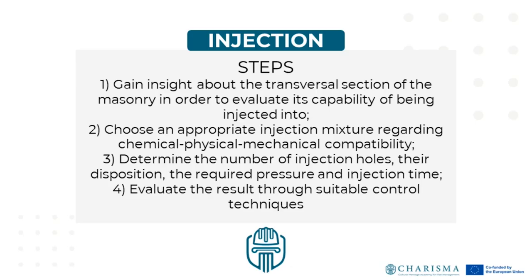Injection is an important intervention that can be used to strengthen walls when feasible. It involves four steps. Firstly, knowledge of the transversal section of the masonry is required in order to evaluate its capability of being injected into. Secondly, an appropriate injection mixture should be selected, paying attention to chemical-physical-mechanical compatibility. Thirdly, the number of injection holes, their disposition, the pressure, and the injection time should be determined. And finally, the results of the intervention should be assessed through suitable control techniques.